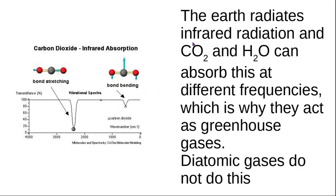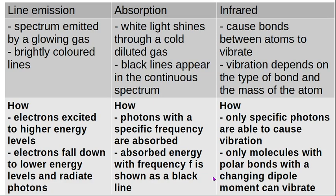Light comes in, hits the earth, and bounces back as infrared radiation, which hits the atmosphere containing carbon dioxide and water. Carbon dioxide has polar bonds and water has polar bonds — it's not a polar molecule overall, but its bonds are polar — and this infrared radiation is absorbed at certain frequencies. That's why they act as greenhouse gases. Diatomic gases are not polar, because the electronegativity of both atoms is the same, so they do not contribute to the greenhouse effect.